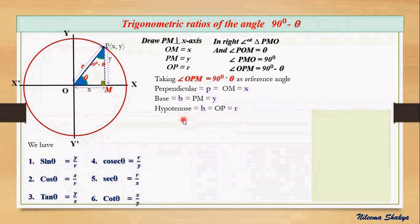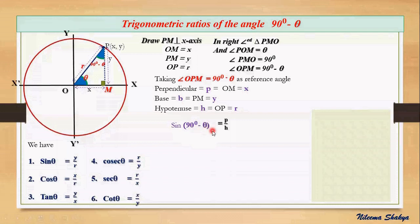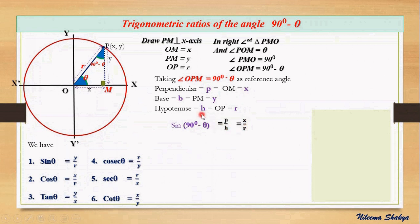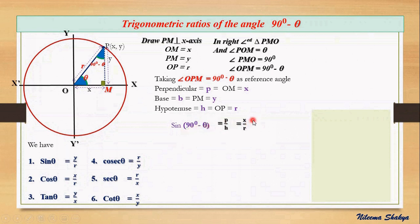Now let's find all the trigonometric ratios of the angle 90° minus theta. The first one: sin(90° − θ). We know its ratio is perpendicular by hypotenuse. For this reference angle, the perpendicular is x and the hypotenuse is r, so sin(90° − θ) = x/r. From our previous work, x/r is the value of cos theta, so sin(90° − θ) = cos θ.